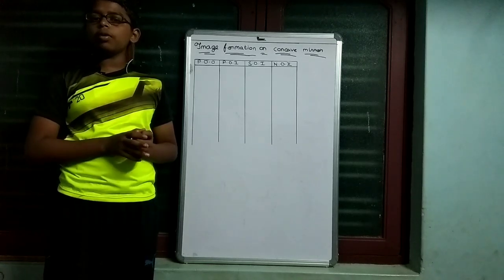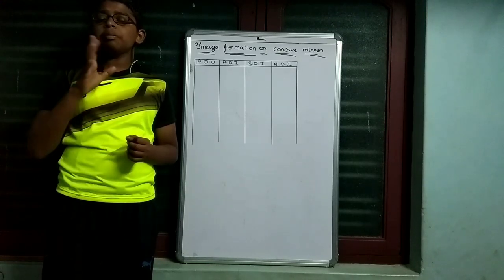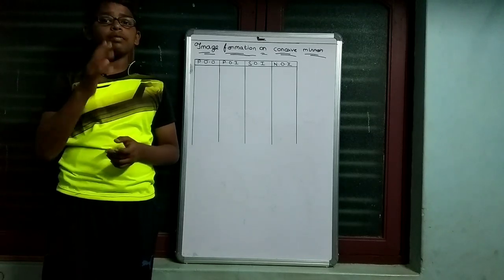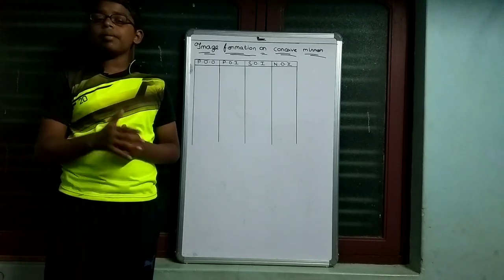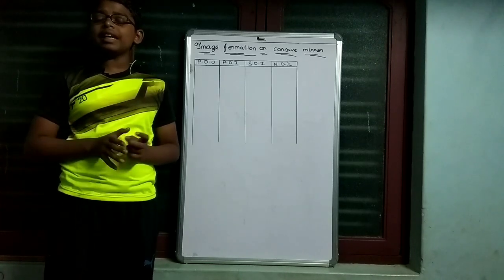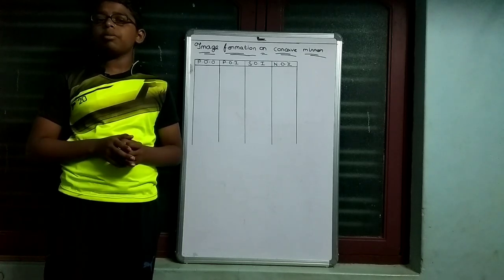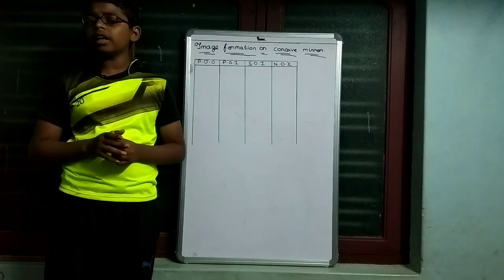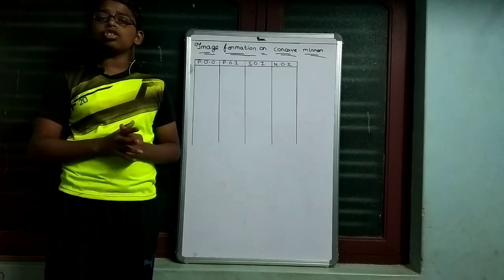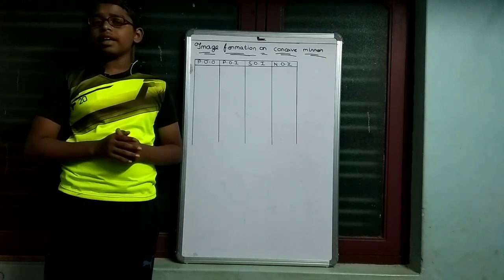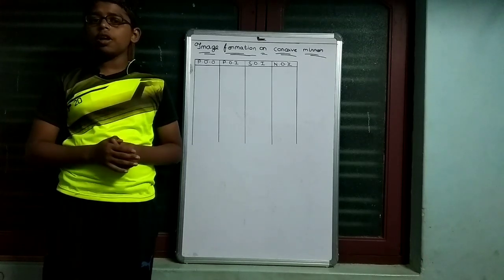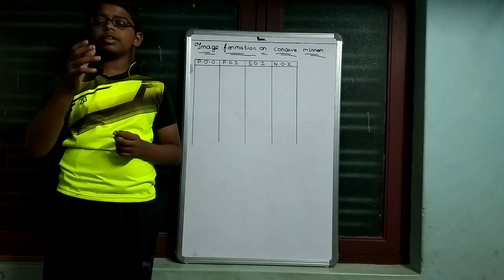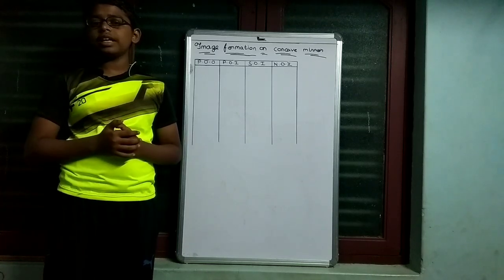We are going to talk about important topics of spherical mirrors. In Part 1 we covered descriptions, and Part 2 covered ray diagrams. Now in Part 3 we will look at ray diagrams: 6 ray diagrams for the concave mirror and 2 ray diagrams for the convex mirror.